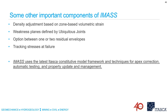Finally, IMAS uses the latest Itasca Constitutive Model framework and techniques for apex correction, automatic testing, and property update and management. This apex correction and accounting for details — especially when the zone constantly crosses between shear to tension or when the major principal stresses intersect — is where most of the yielding and progressive damage happens. It's really important to account for those details at the apexes correctly to have a reliable estimate of rock mass damage and accumulation of plastic shear strain.